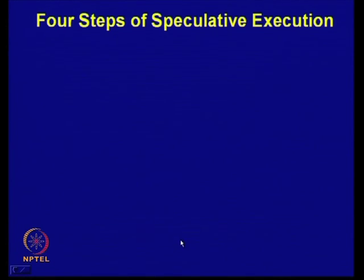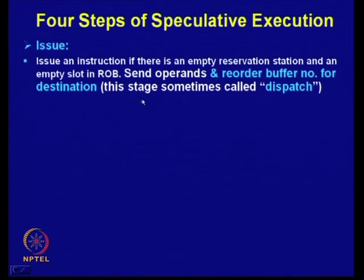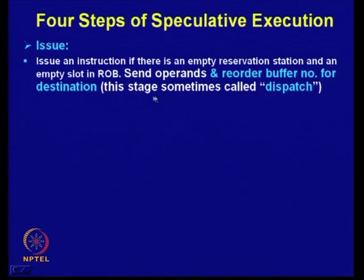There are four steps in hardware-based speculation (also called speculated execution). The first step is Issue: issue an instruction if there is an empty reservation station and an empty slot in the ROB. A structural hazard results if either is unavailable. This step sends operands and the reorder buffer number for the destination, and is sometimes called dispatch.